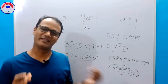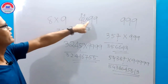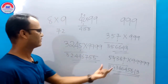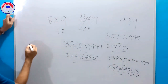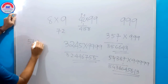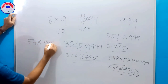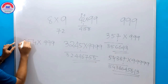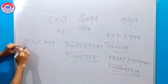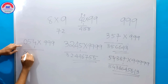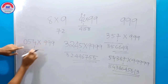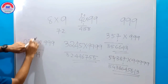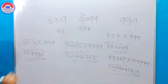Now suppose the number of digits is different — for example, 54 multiplied by 999 where 54 is a 2-digit number and 999 is a 3-digit number. You just put a 0 in front: 054. Same process — subtract 1 to get 053. Then 9 minus 0 is 9, 9 minus 5 is 4, then unit digit 10 minus 4 is 6. That is your answer: 053946.